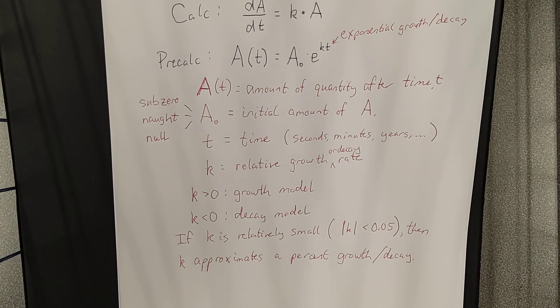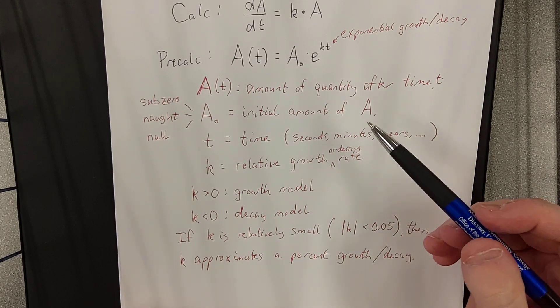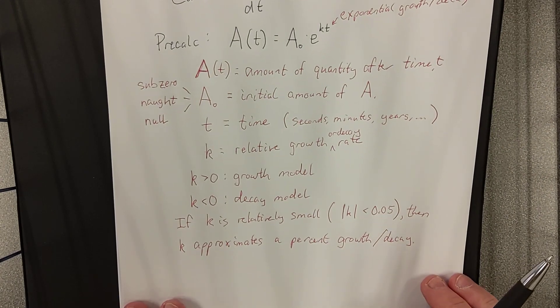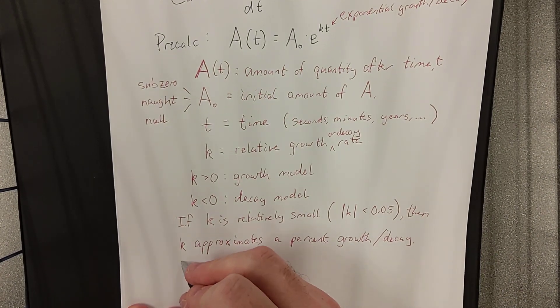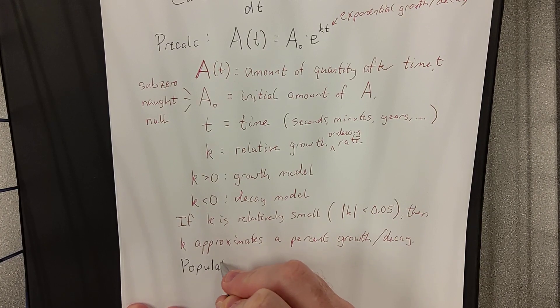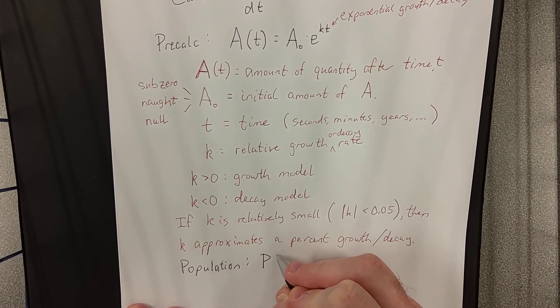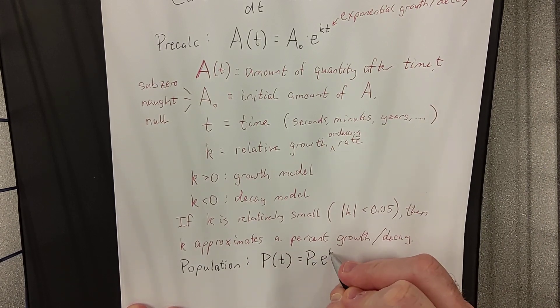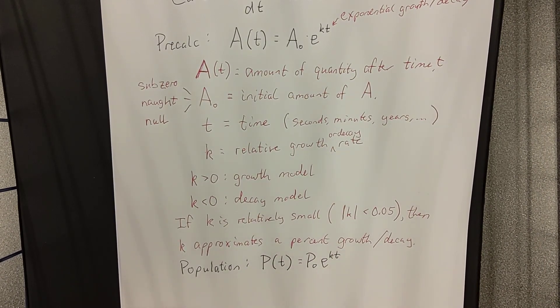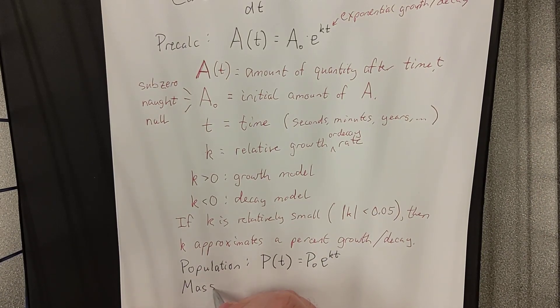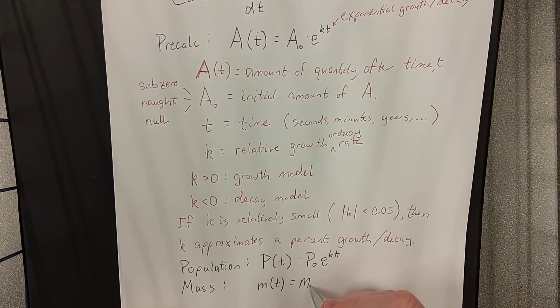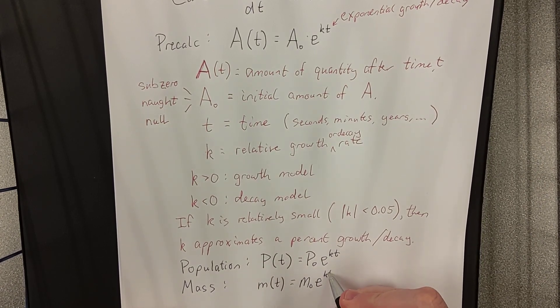Now, one other thing that I wanted to reiterate before we move on to our next video is the reason that I used A as our dependent variable back here is that A refers to an amount. Now, please know that that is not restricted. It doesn't have to be that way. So, for example, if we wanted to talk about a population, we could use P to describe the population. So, P(t) is equal to P naught e to the kt. Or, if we were referring to the mass of a radioactive substance, we could say m(t) is equal to m naught e to the kt.